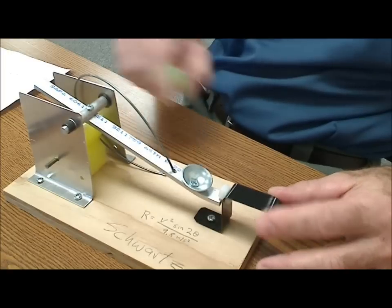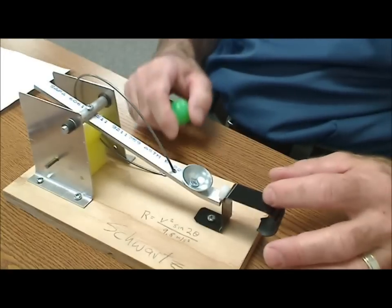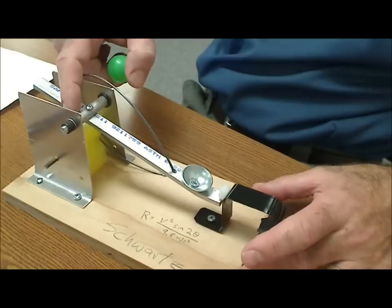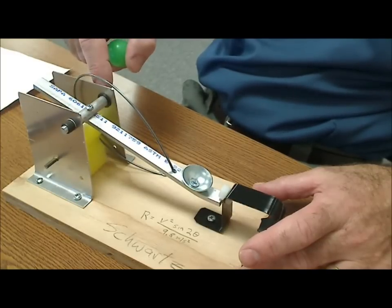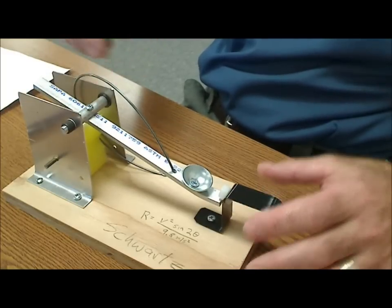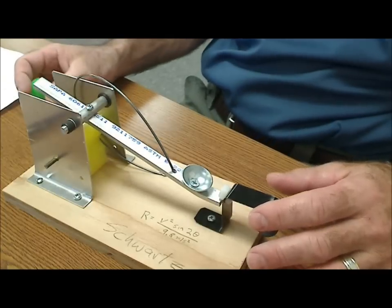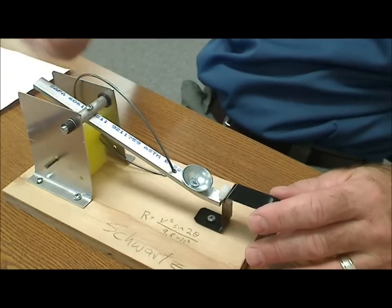We used lathe, mill, brake, shear. We built the trigger mechanism, the arm, turned the axle on the lathe, added plastic bushings, and the flat spot on the axle. We used a metal mill to cut that flat spot.